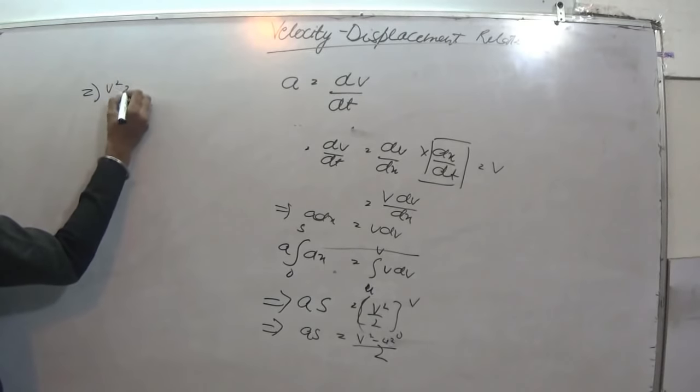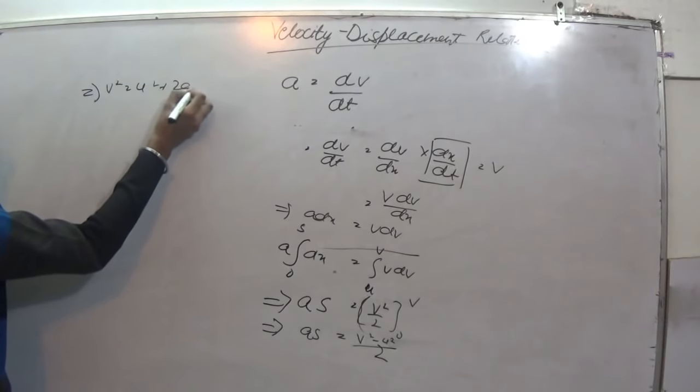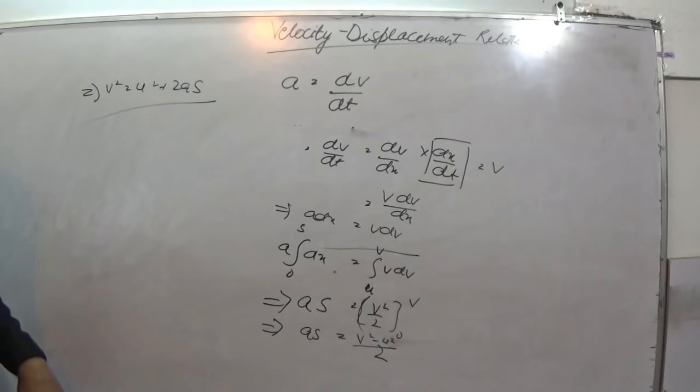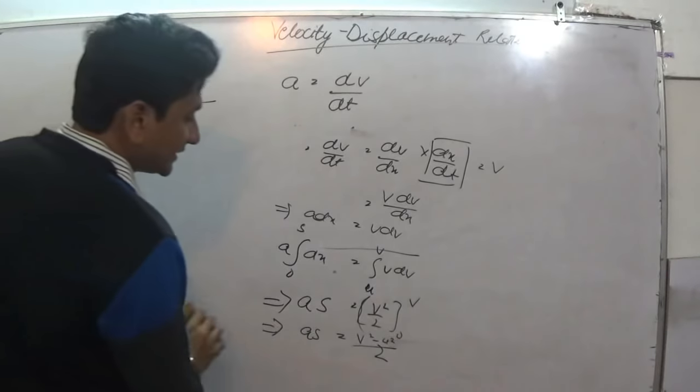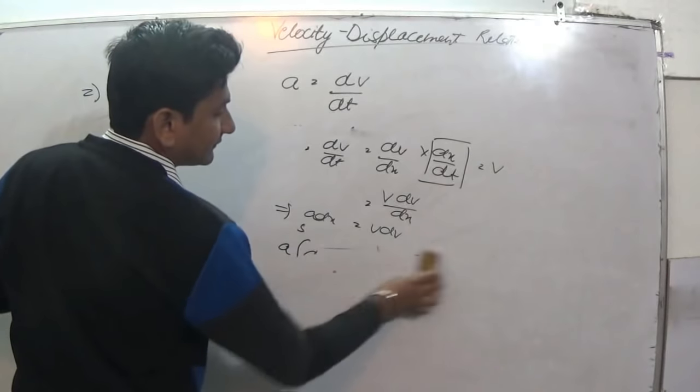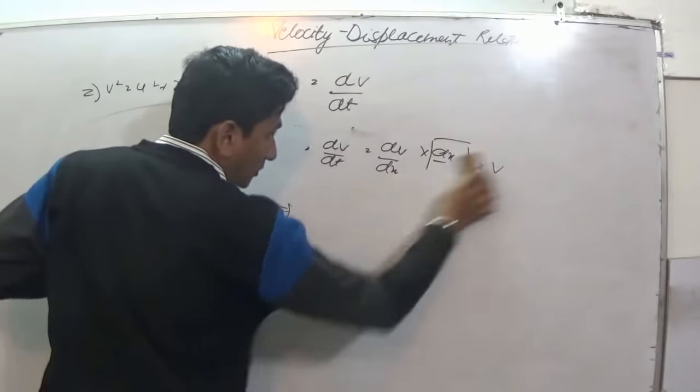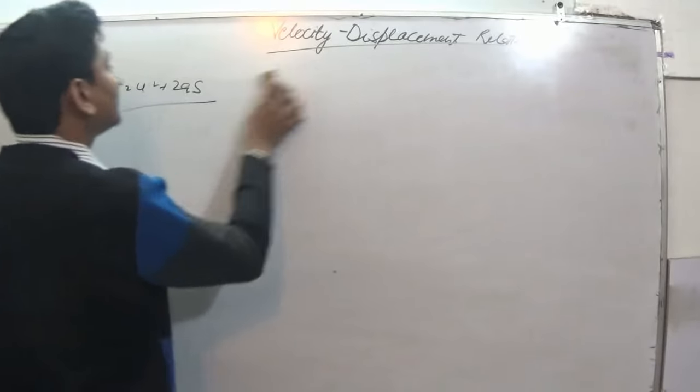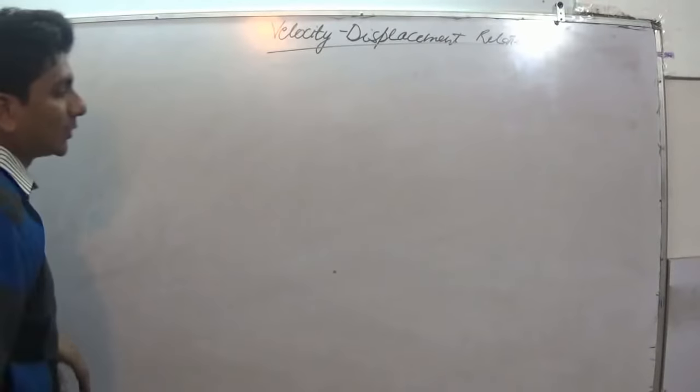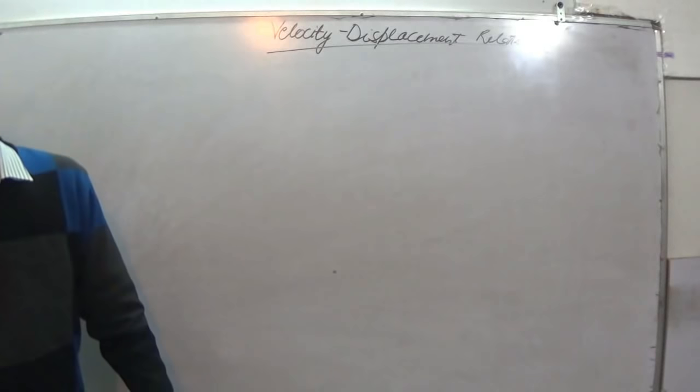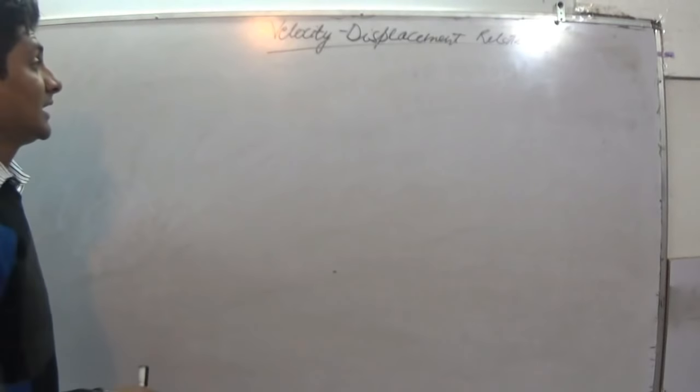Implies v square by 2as. Hence we find that all three equations can be found out in more than one way. You just have to remember the concept, no need to cram how we derive this particular equation.